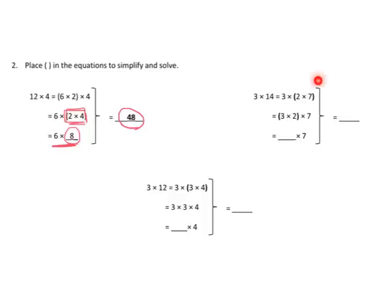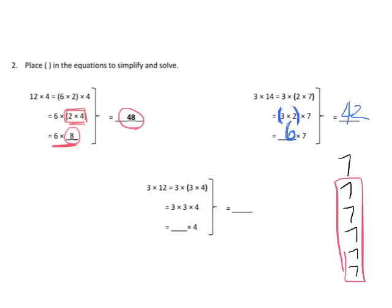Over here in the upper right-hand corner: 14 is a rather large number, so we're going to factor it to 2 times 7. Then we use the associative property to group 3 times 2, and 3 times 2 is 6. So now we have 6 times 7, and 6 times 7 is 42. If you don't remember that, you could do 6 groups of 7. Here's 5 groups of 7 — that's 35 — plus an extra 7 for 1 more group of 7. So 35 plus 7 is 42.